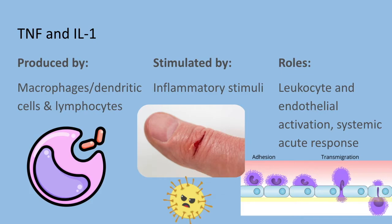Interleukin-1 can activate fibroblasts to produce collagen. These cytokines are also important for the systemic acute phase responses associated with infection or injury, which include fever. TNF regulates energy balance by promoting lipid and protein mobilization and suppressing appetite, so sustained production of TNF can contribute to cachexia — a pathologic state characterized by weight loss and anorexia — sometimes seen in chronic infection and neoplastic diseases. Notably, TNF antagonists have been very effective in treating chronic inflammatory diseases, although these patients often become susceptible to mycobacterial infection due to reduced ability of macrophages to kill intracellular microbes.